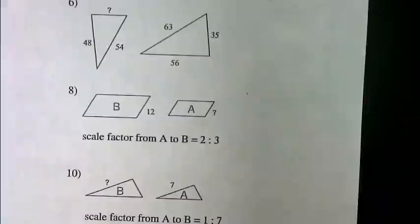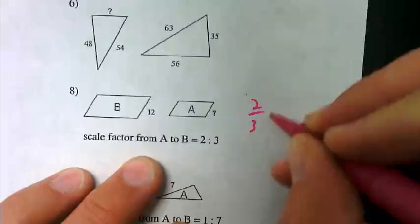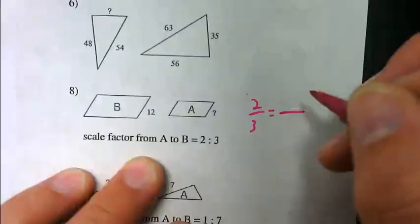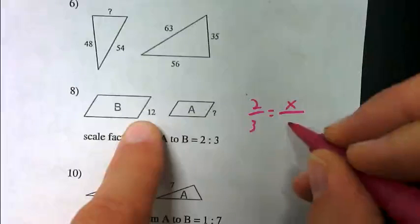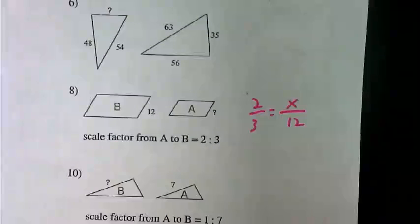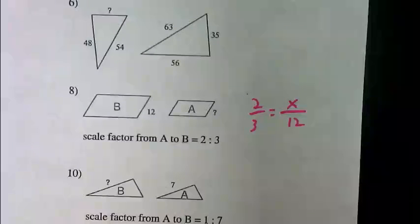So if I write this out as a proportion, I'd have two-thirds is equal to... A has the missing side, X. B has the side that they gave us was 12. It's the same idea. It's just they didn't give you any of the other parts. They're just starting you off with the scale factor. So it's the same application.